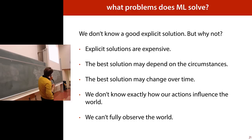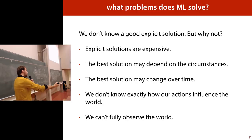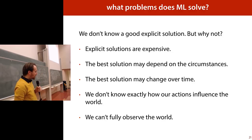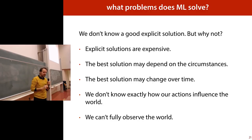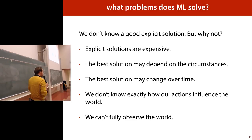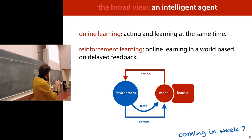Sometimes we can't fully observe the world — like in poker, we don't know what cards our opponent has, so we have to infer and reason based on imperfect information. If you take the broad view and have all these problems — an unobservable world, actions that influence it, no exact solution — you usually end up with reinforcement learning, which is a flavour of machine learning. You have a learner, an environment, you take an action, the environment puts you in a new state and gives you a reward. We'll look at that in week 7.